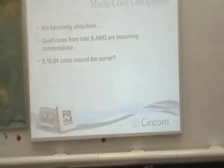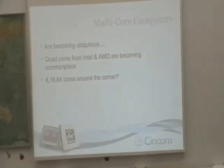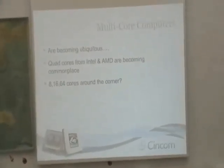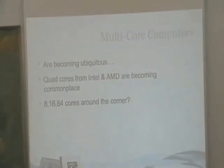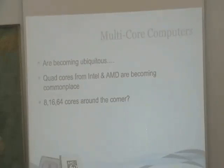First, multi-core computers. Today, it's pretty difficult to buy a powerful computer without it being multi-core. Even netbooks are starting to be dual-core computers. The machine I have right here is a dual-core. My desktop at home is a quad-core. And we know 8, 16, 64 cores will be coming right around the corner. So they're becoming prevalent and commonplace.